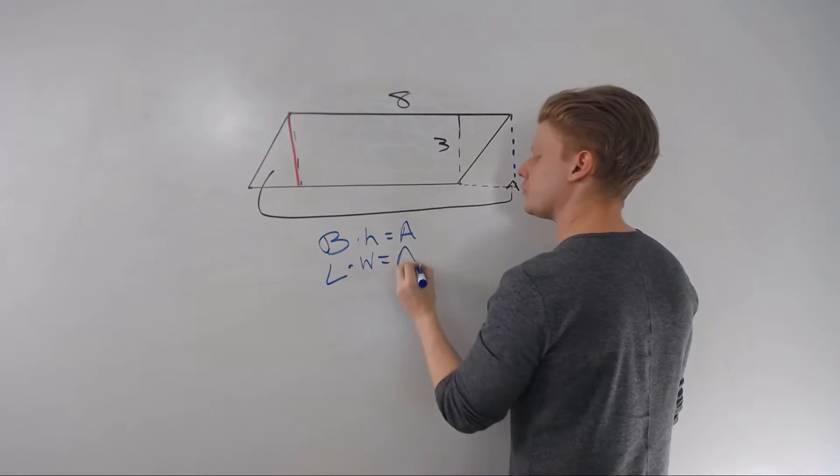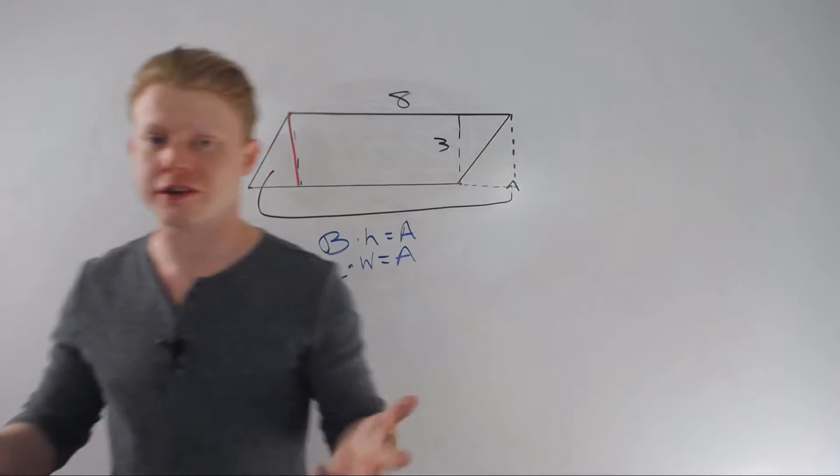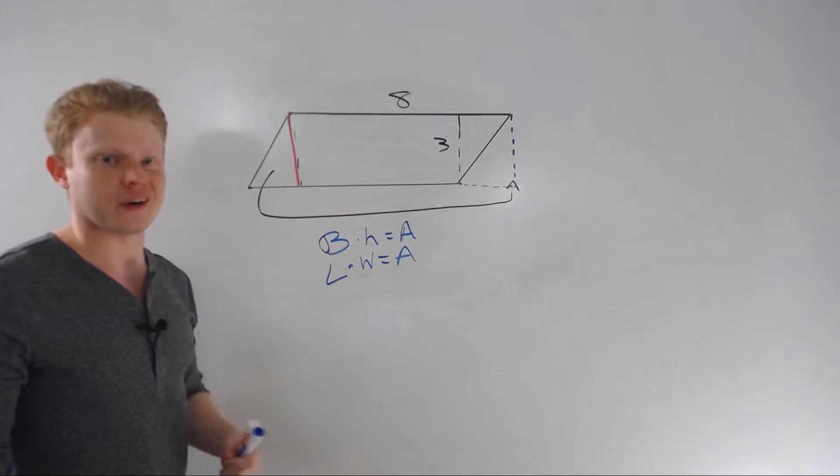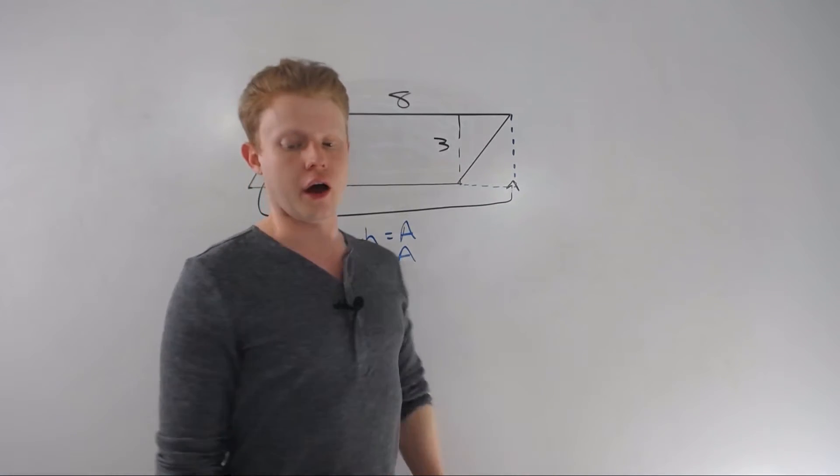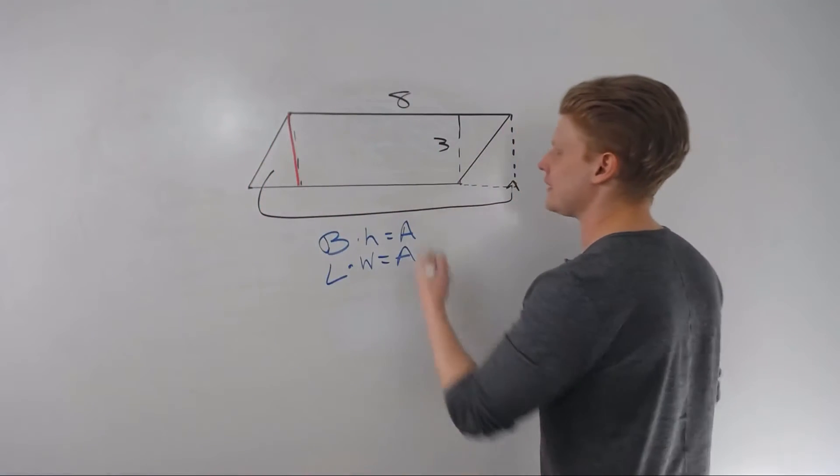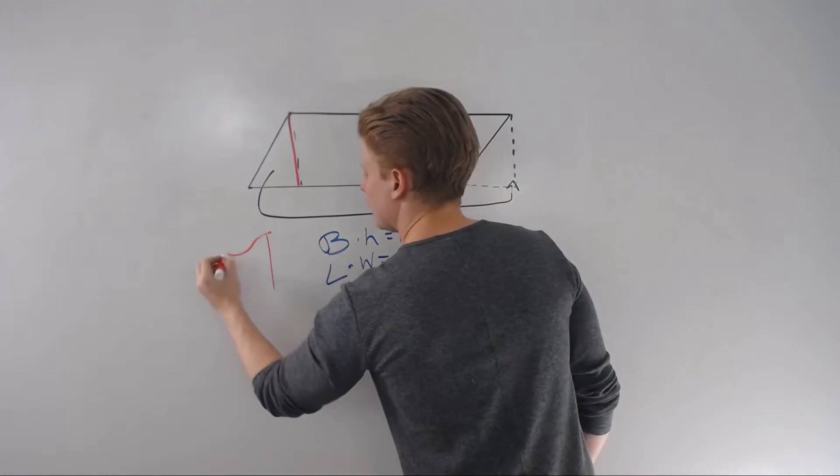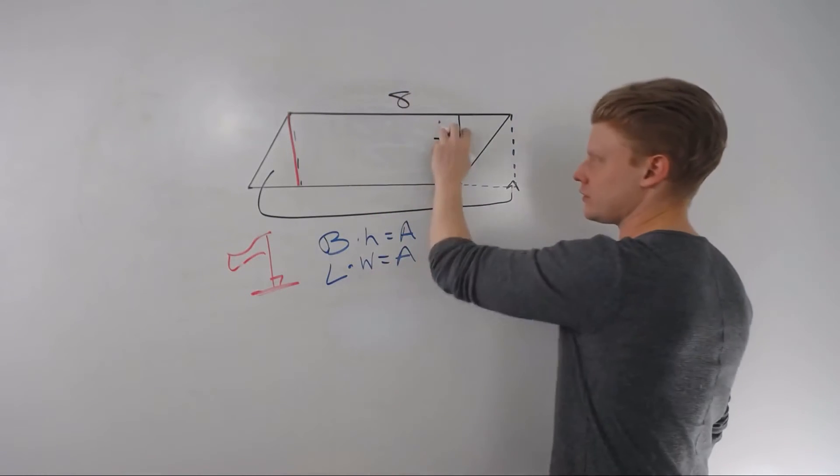Now, one of the reasons people say base times height, and some of you have learned rectangles that way, which I think is probably a good thing, is because height is special. Height is different. Height is not slanted. Height is at attention. Height is up and down. Height is perpendicular to the base. It's the flagpole height, right? It's the flagpole height.